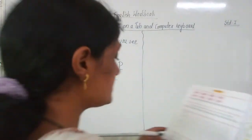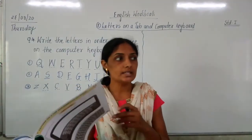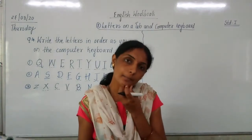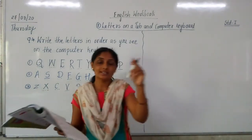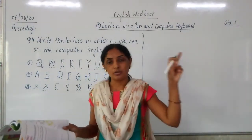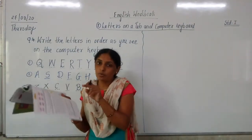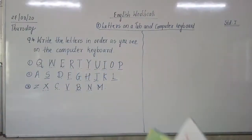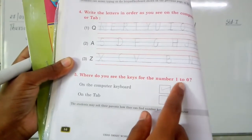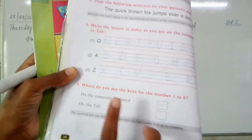The fifth question is: Where do you see the keys for the numbers one to zero? Do we see numbers on the tab? Yes, you see on the tab, but more numbers are on the keyboard — one to zero, and also on another side zero to nine. Our answer is: on the computer keyboard. We have completed the fifth question.